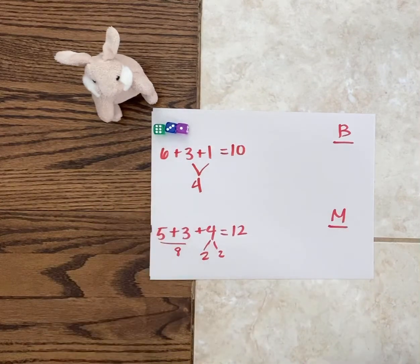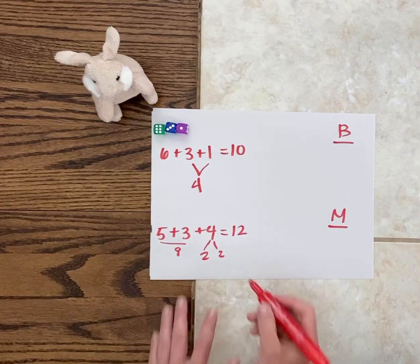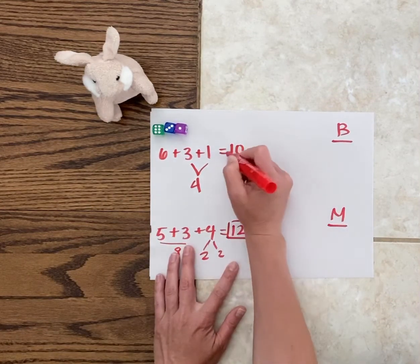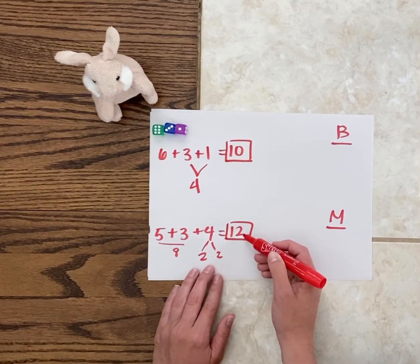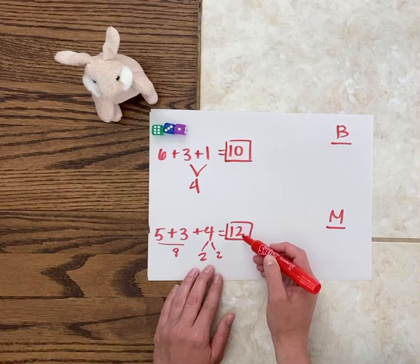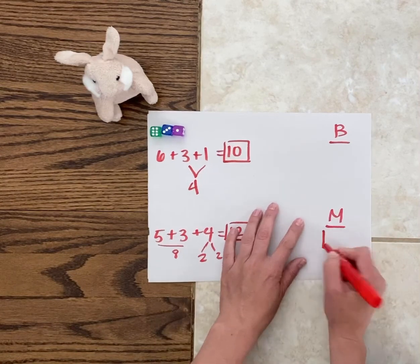So we will be looking at who has the higher sum at the end of each round. In this case I ended up with the higher sum because 12 is greater than 10, so I will get a point for this round.